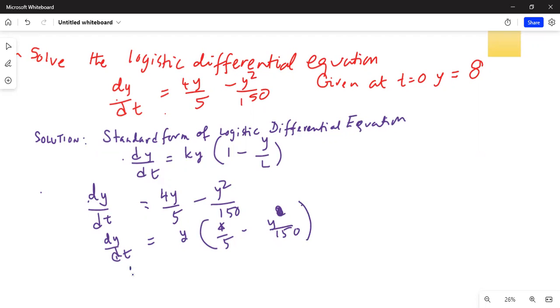Now I have to make the first term inside the parenthesis on the right hand side as 1. In order to do that, I have to take out 4 over 5 outside. When I do that outside the parenthesis, the first term is 1 minus y divided by 150 multiplied by 5 over 4. Because 4 divided by 5 multiplied by 5 divided by 4 is 1.